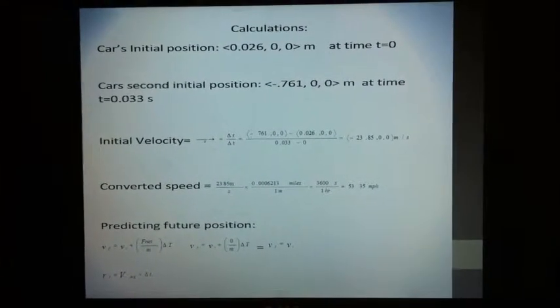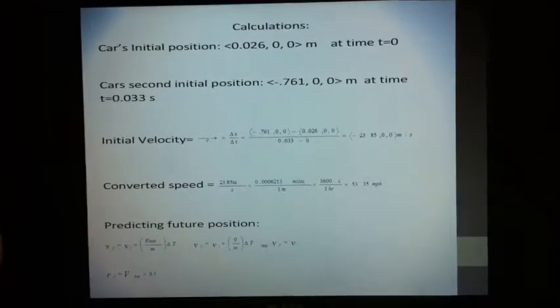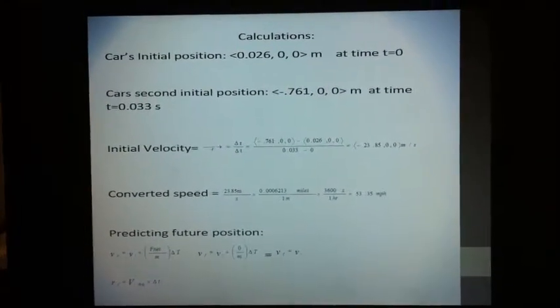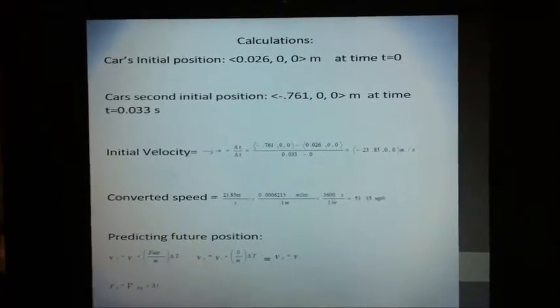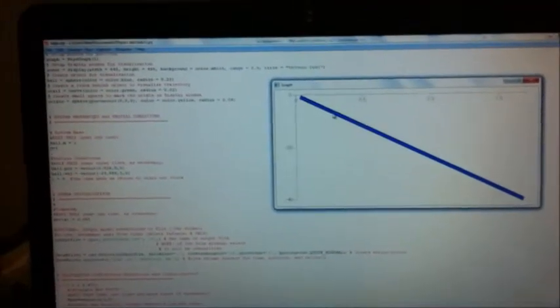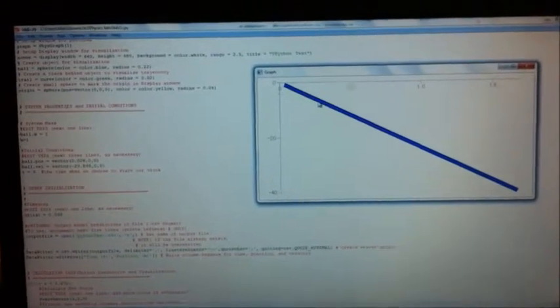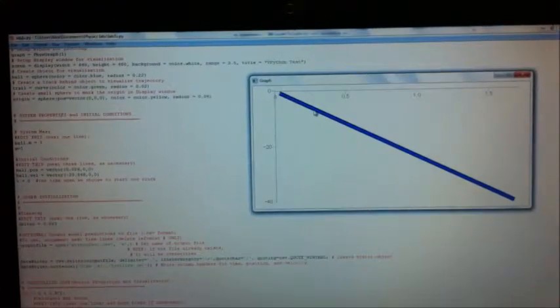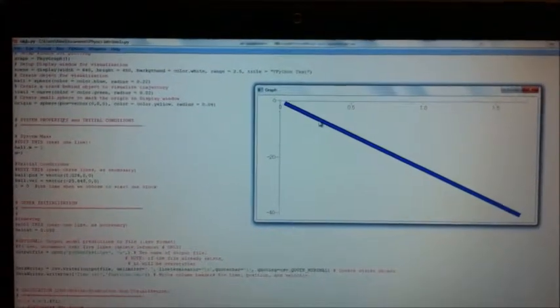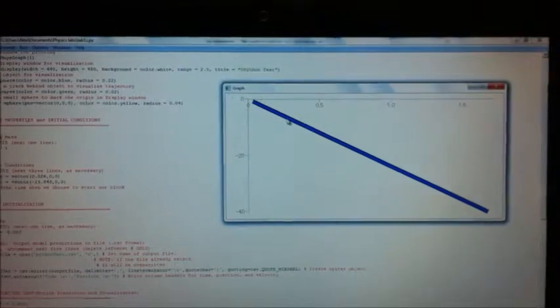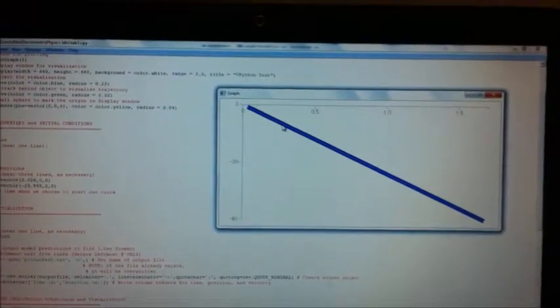Now assuming that the car was moving at constant velocity, I am able to assume that the force is zero. Now using Newton's second law, I am able to predict the end position of my car and construct a 3D model. In order to construct a 3D model, I used the code written on the left. I inputted the initial position and initial velocity I found in my calculations. And when you hit run module, you get a graph on the right. This graph has a steady slope, meaning that it is at constant velocity.